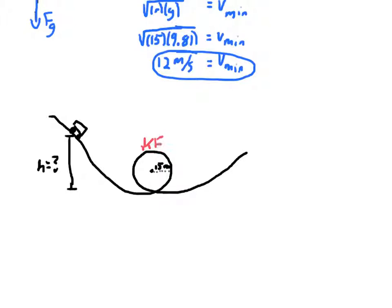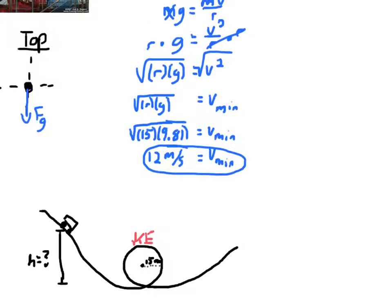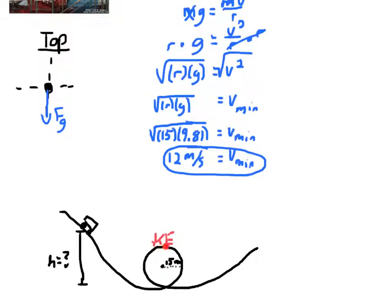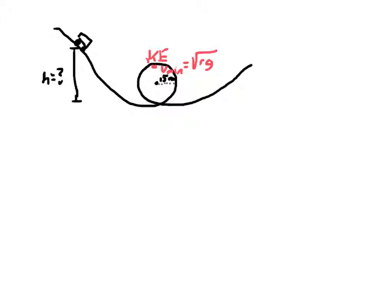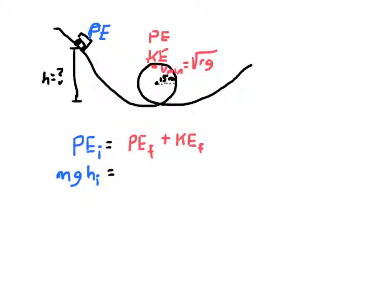You have to have some kinetic energy at the top of the loop so gravity doesn't just pull you down. We calculated the minimum speed needed at the top: square root of r times g. In the beginning, we start with all potential energy at rest at the top of a hill. At the top of the loop — which is 2r, or 30 meters above the ground — we need both some potential energy and some kinetic energy.